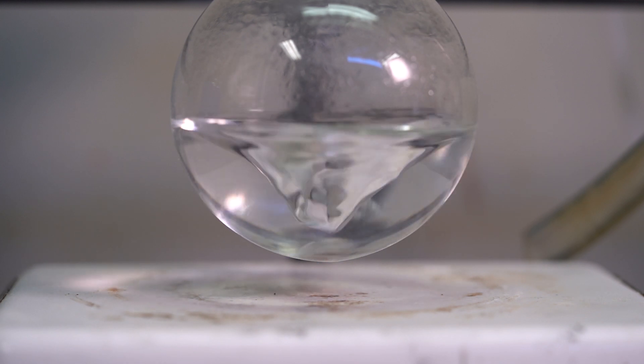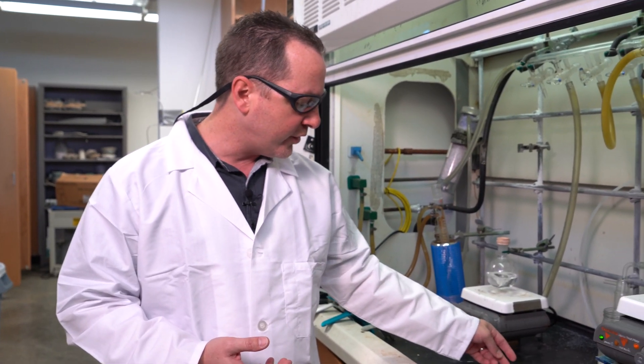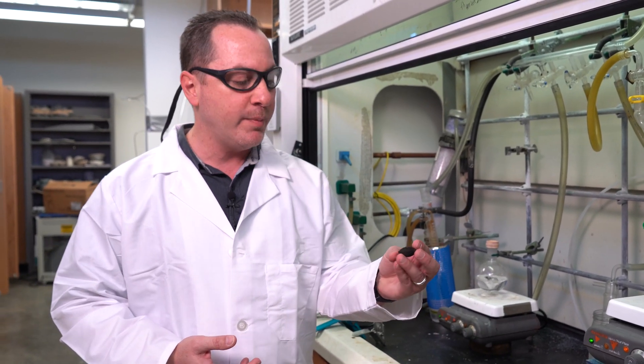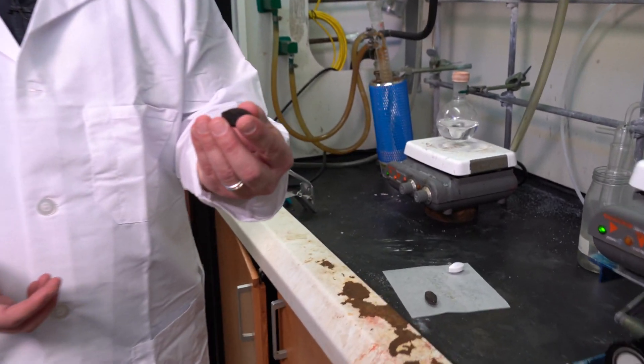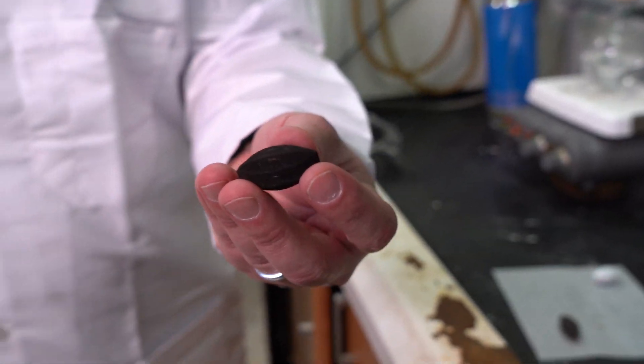What we found out is that when we perform the Billups reduction using these Teflon stir bars, they will become black, which is something that was unexpected.